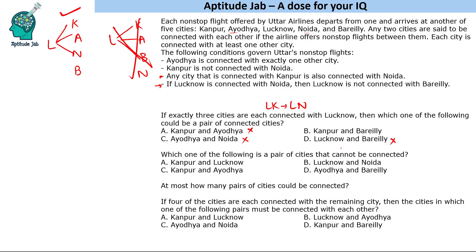So Lucknow and Bareilly cannot be connected. This means Kanpur and Bareilly could be a connection — a valid pair of connected cities. We eliminated 3 of the options and got the fourth one. Moving to Question 2: Which of the following is a pair of cities that cannot be connected? We look option by option. First, Kanpur and Lucknow — we just saw in the previous question that Kanpur and Lucknow can be connected, so that is possible. Lucknow and Noida is also possible, as seen in the first question.